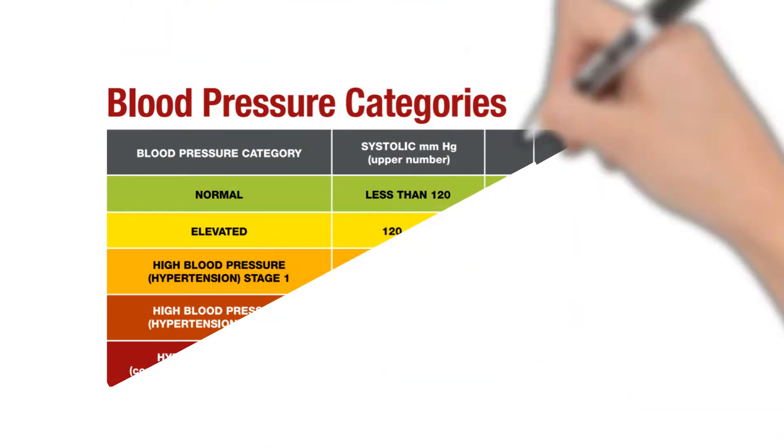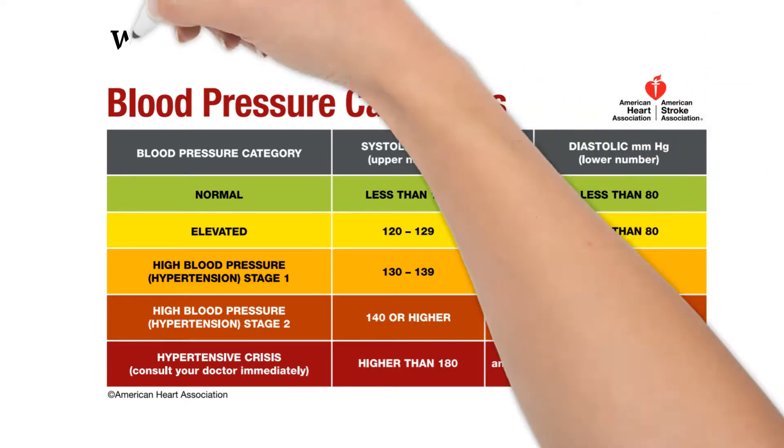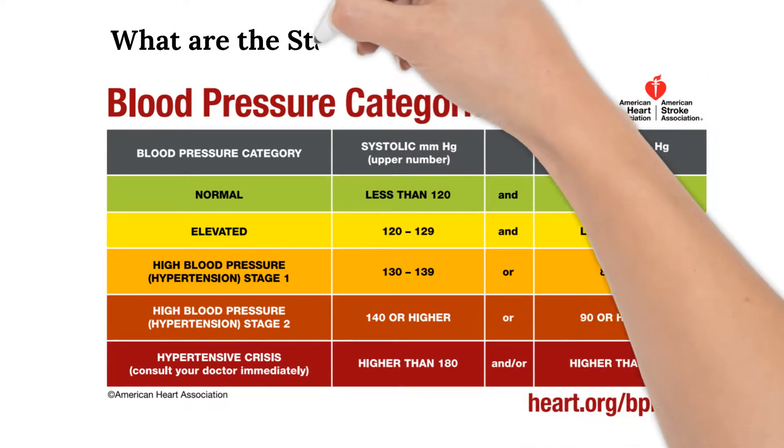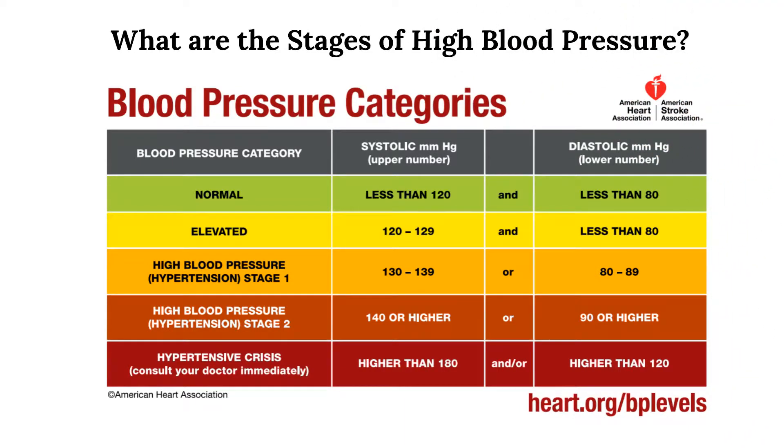When systolic pressure is 140 mmHg or over, and diastolic pressure is 90 mmHg or above, that is referred to as stage 2 high blood pressure or hypertension stage 2.